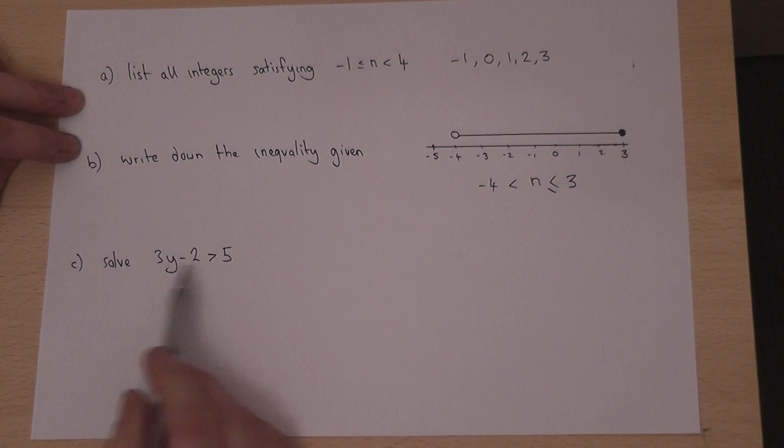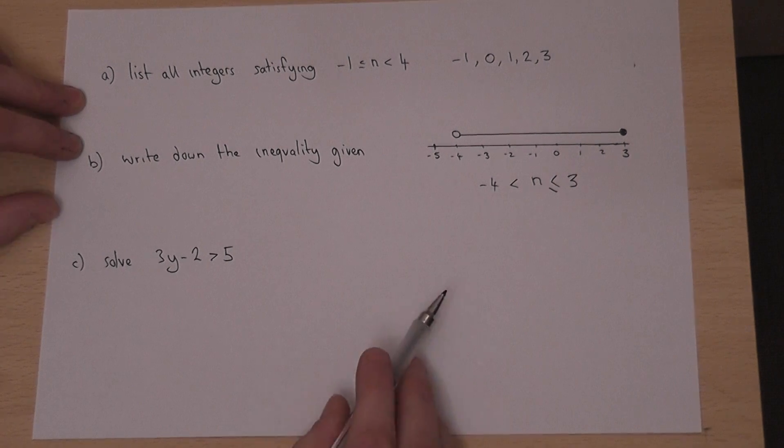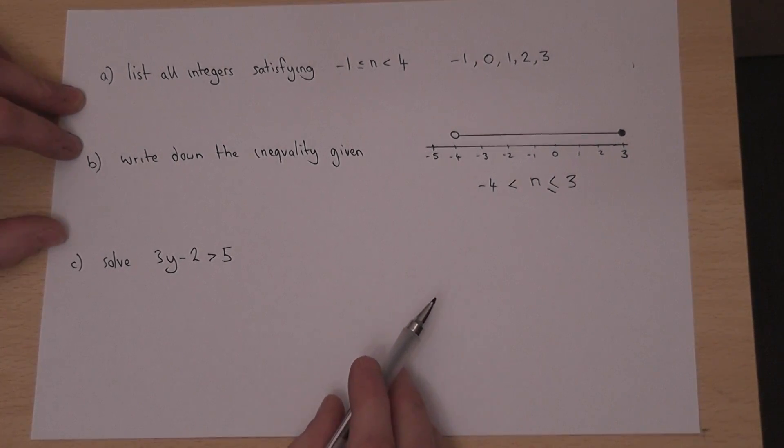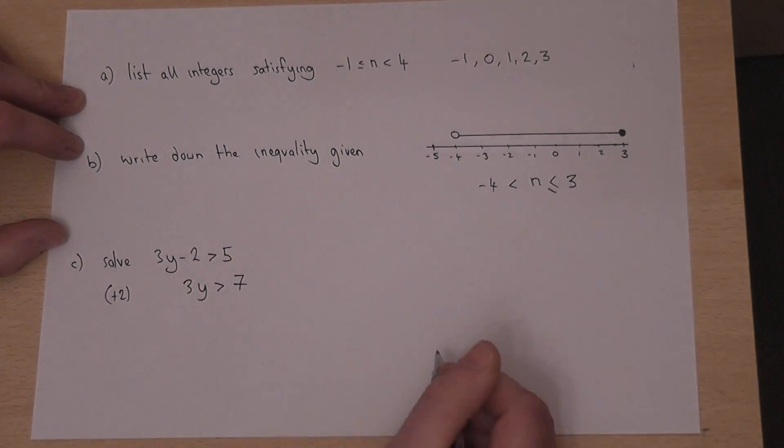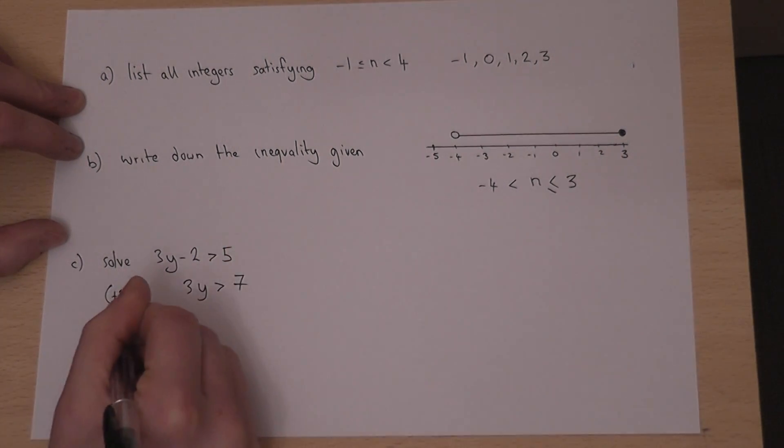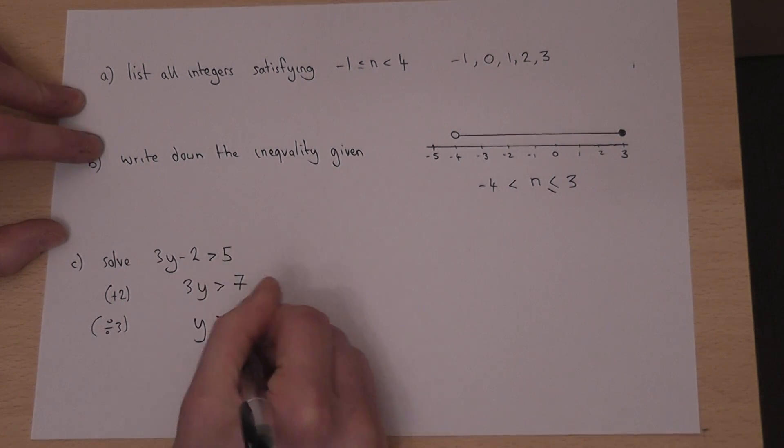If you're asked to solve an equation in which there is an inequality, we solve it like any normal equation but maintain the symbol throughout. So if I add 2 to both sides, 3y is bigger than 7. If I then divide by 3, I get y is greater than 7 over 3.